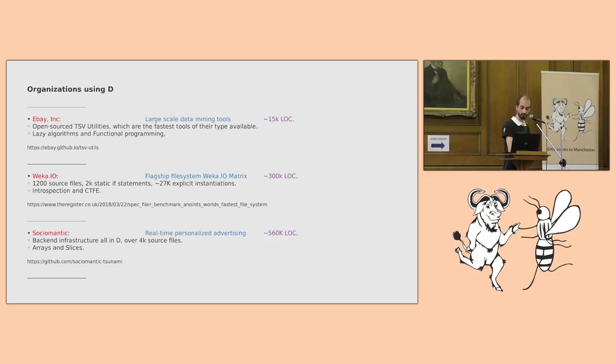Weka, they are an Israeli-based company who have been labelled as the world's fastest parallel file system for high-performance computing. They boast a rather moderate code size and what kept their size down is probably helped by their heavy use of compile-time introspection and evaluation.